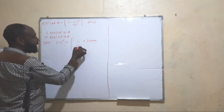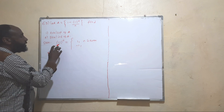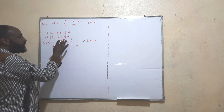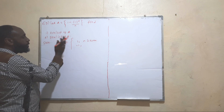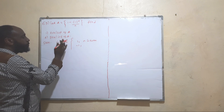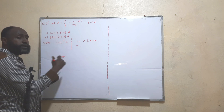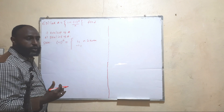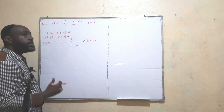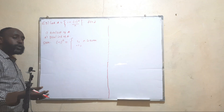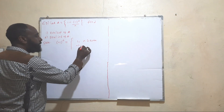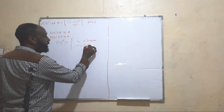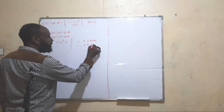And for odd n, the result is -1. For example, (-1)^1 = -1, (-1)^3 = -1, (-1)^5 = -1, and so on. So for n odd, the value is -1.